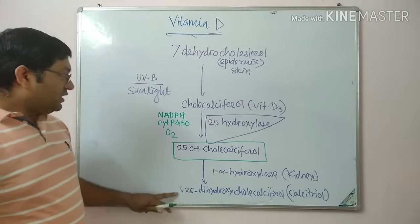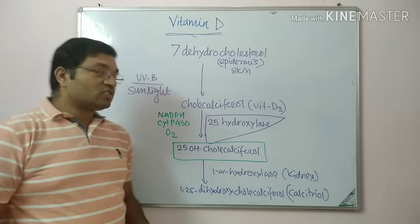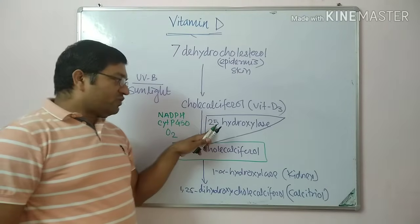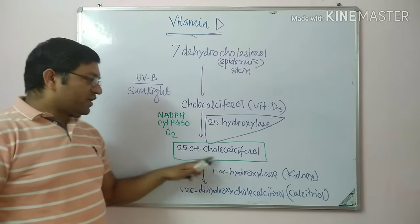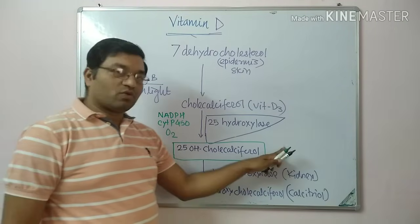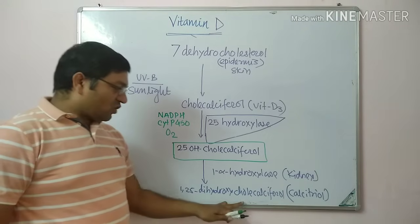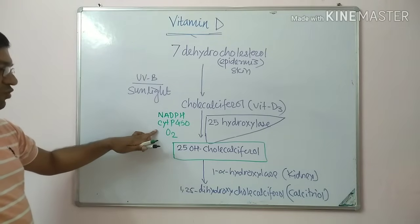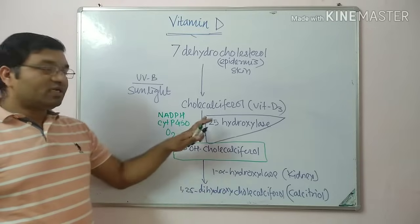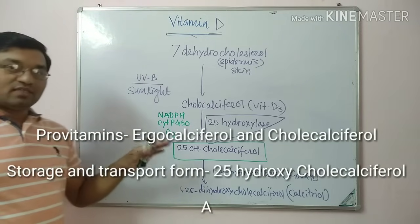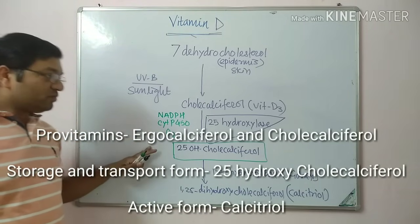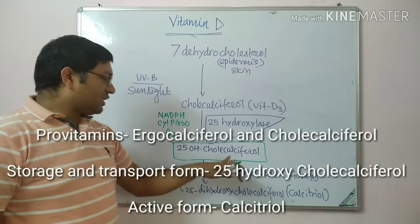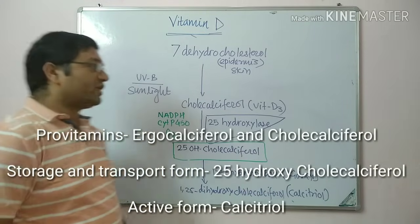To summarize the activation of vitamin D: 7-dehydrocholesterol in the epidermis and dermis of the skin is converted into cholecalciferol on exposure to UVB rays. By the action of 25-hydroxylase in the liver, it becomes 25-hydroxycholecalciferol, the major storage and circulatory form. This is then converted into calcitriol, the active form, in the kidney by 1-alpha-hydroxylase, which also requires NADPH, cytochrome P450, and molecular oxygen. Ergocalciferol and cholecalciferol are provitamins.